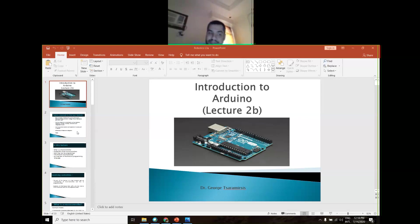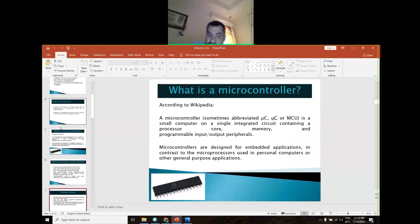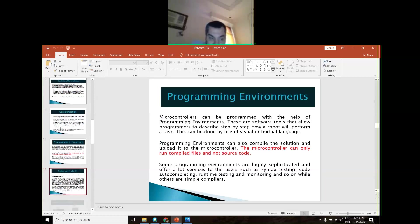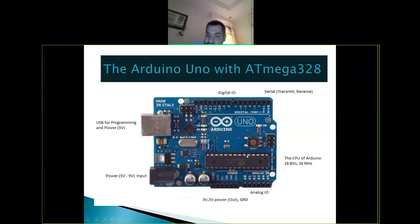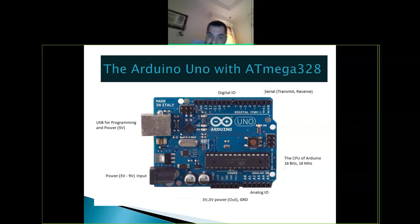This Arduino board is a very simple input-process-output device. It has very low power consumption, so with a small battery you can power it for a long time. It's not a very powerful processor — it can do very simple operations. Let me show you how to connect the motor and sensor to it.